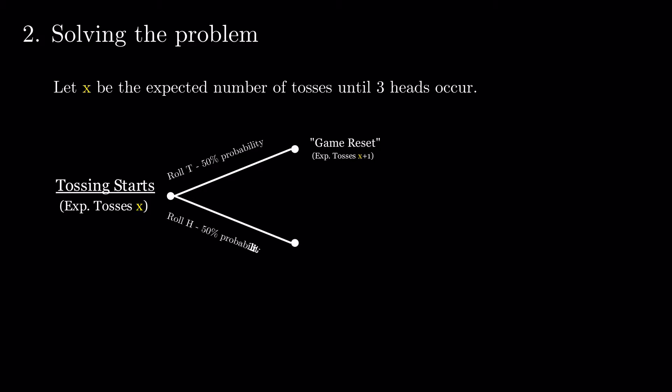From the top, we also have a 50% chance of getting heads. After this, we either get tails and our game resets, resulting in two additional tosses before our already expected x. Or we get heads again with 50% probability.